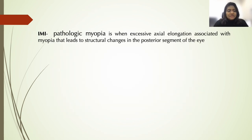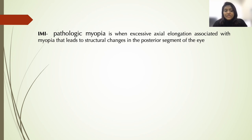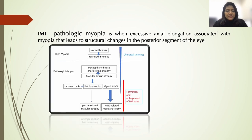The International Myopia Institute has defined pathologic myopia as when it is associated with excessive axial elongation leading to structural changes in the posterior segment of the eye.